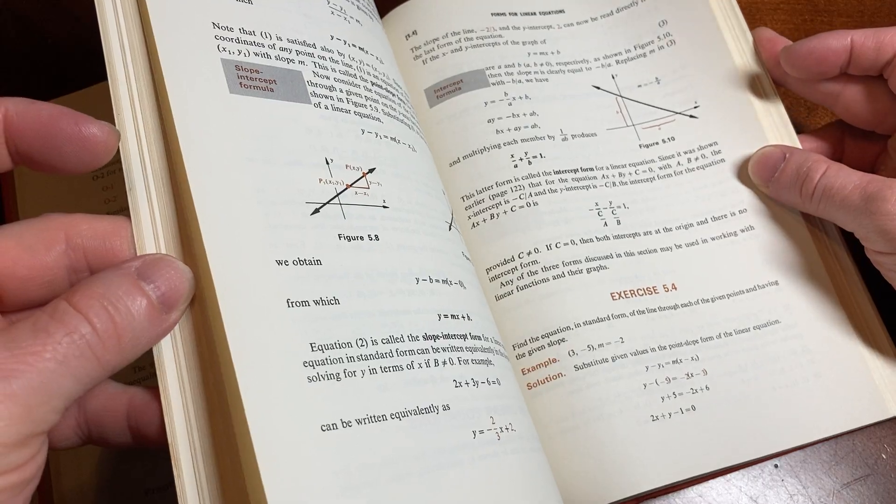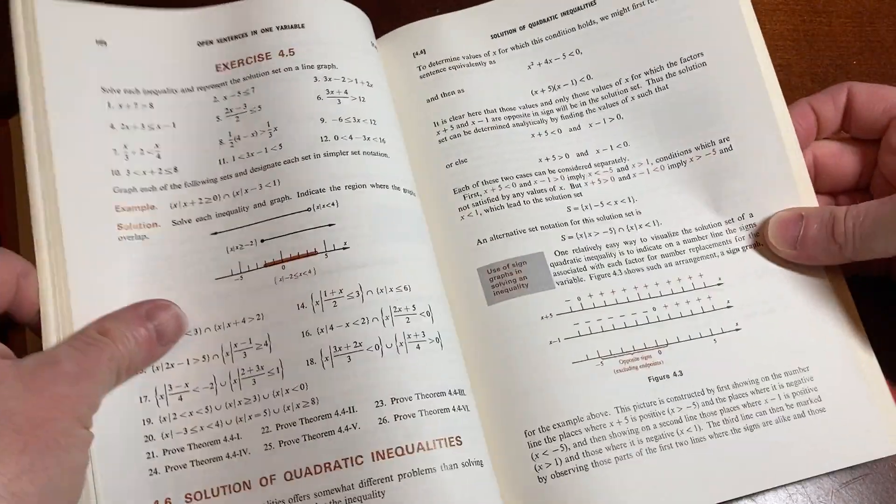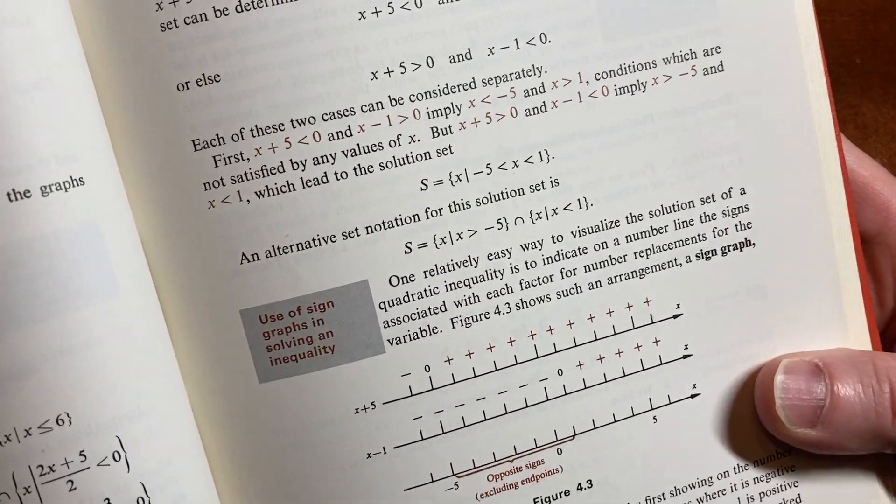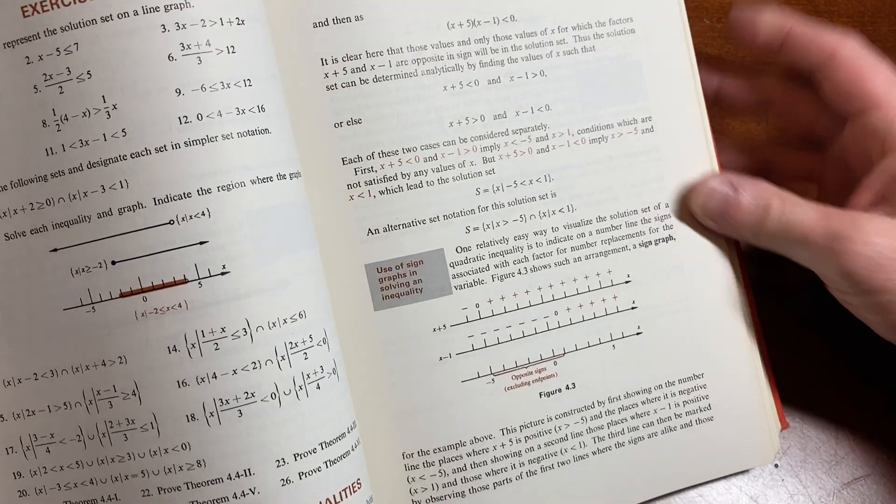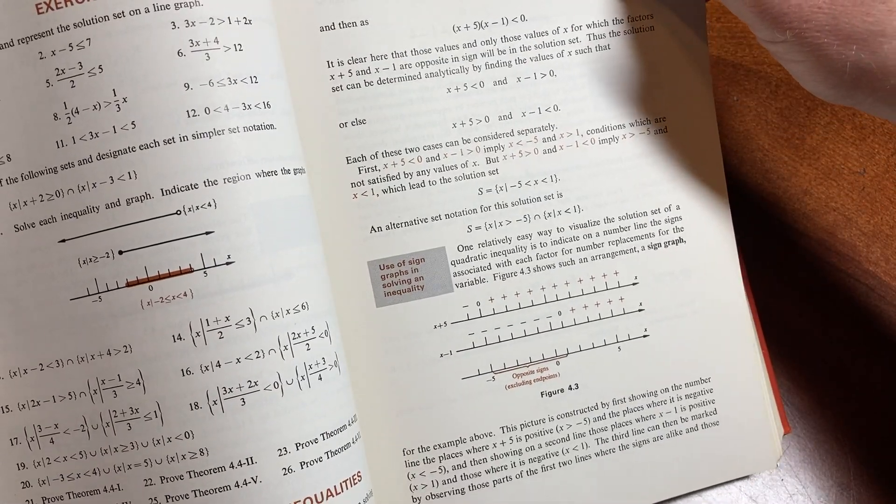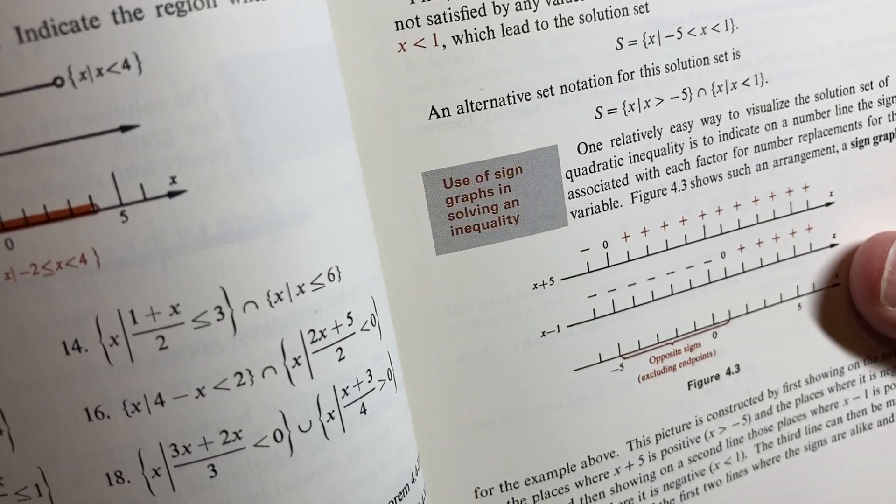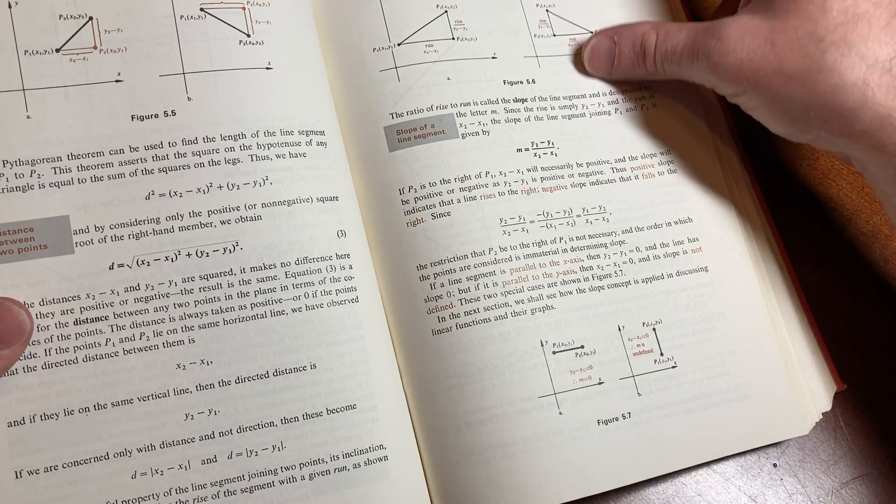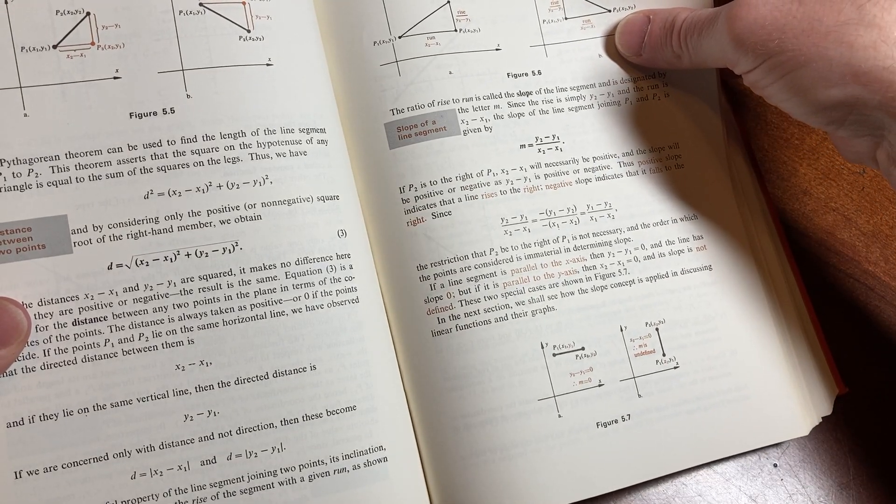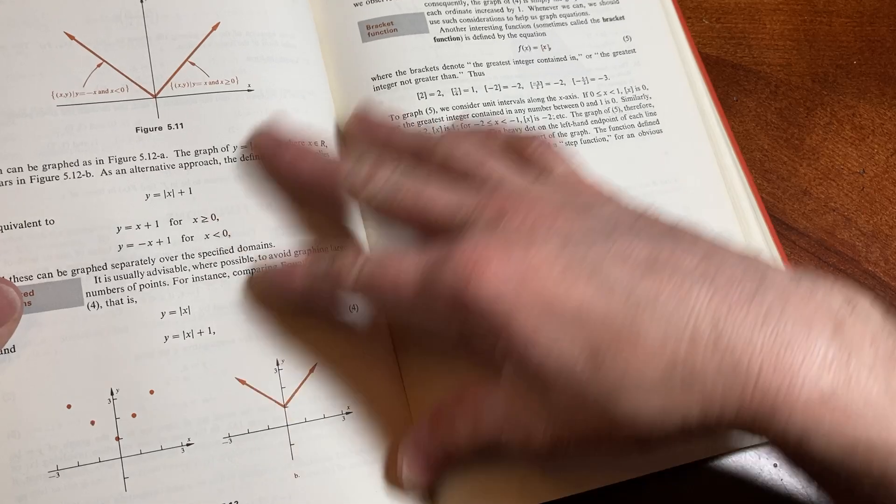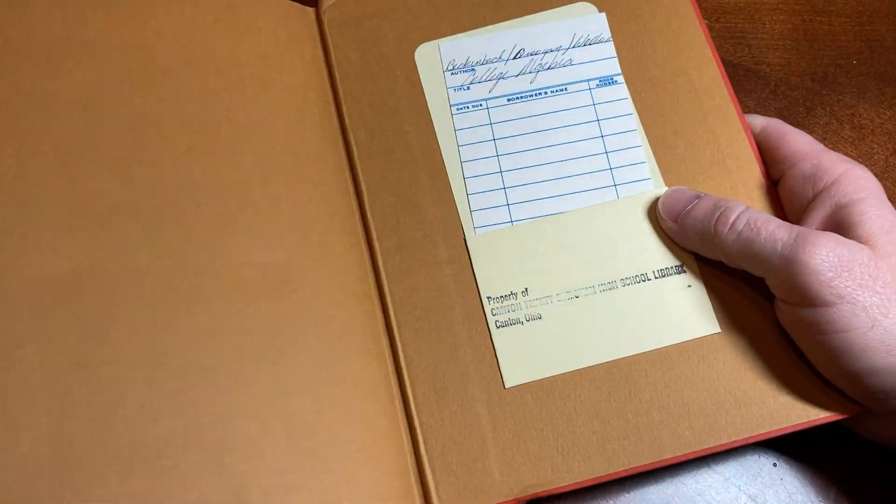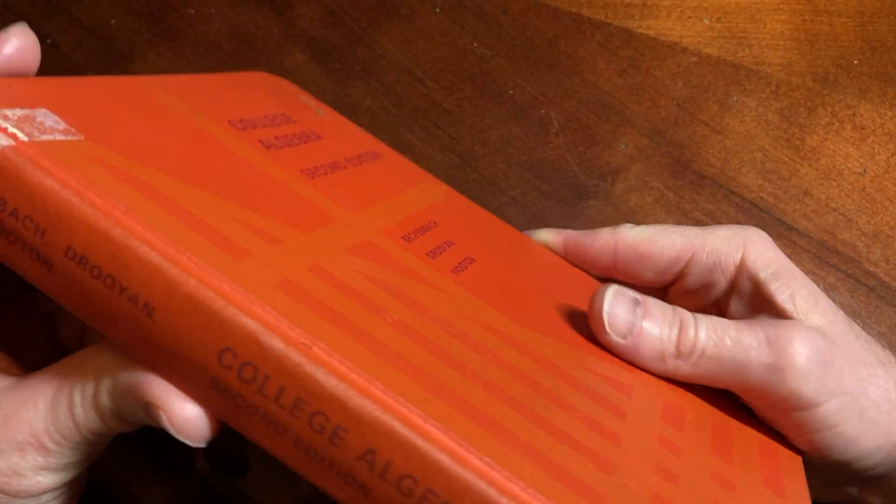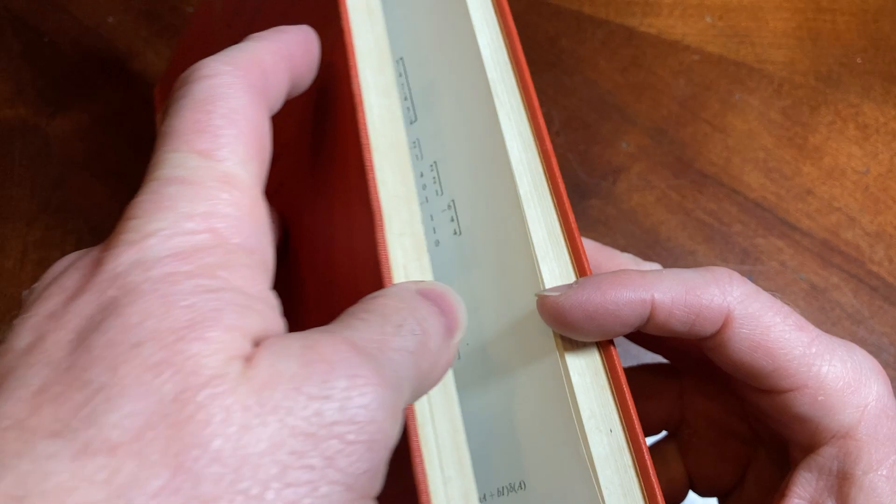Forms for linear equations. Solution of quadratic inequalities. This is just a solid, solid book here. Nice examples with some sets. Good stuff. Use of sign graphs in solving an inequality. That's certainly one way to do it. Kind of a nice book. I will look for it. If I can find it, I'll leave a link in the description. I don't know if there's any copies out there. But if there are, I will leave a link.